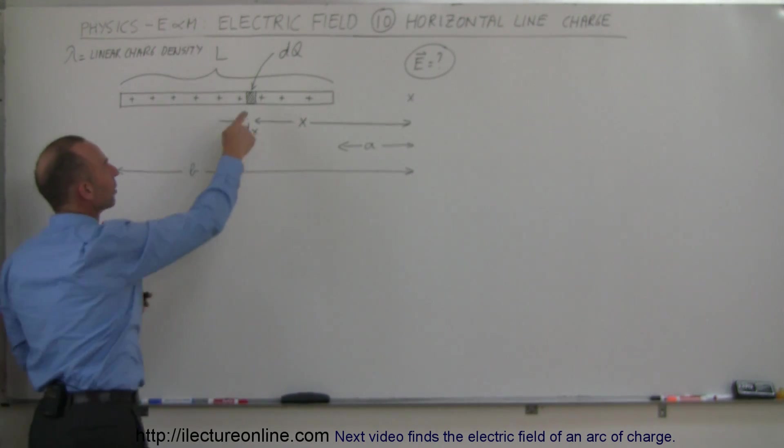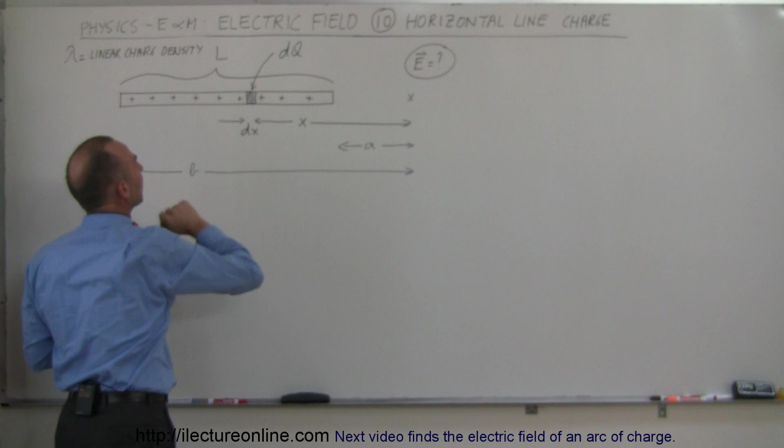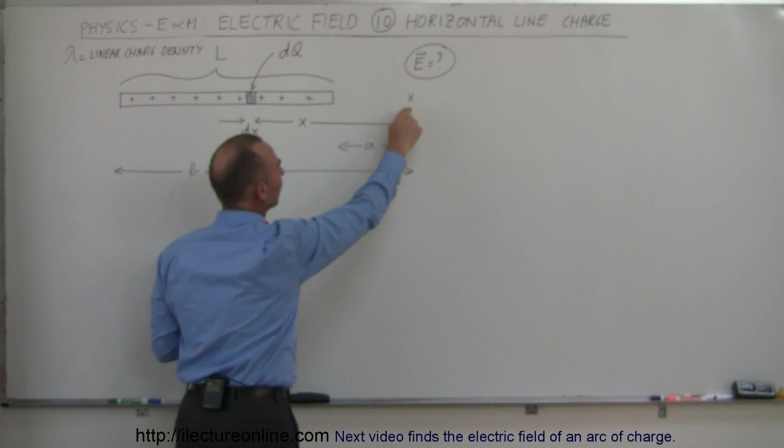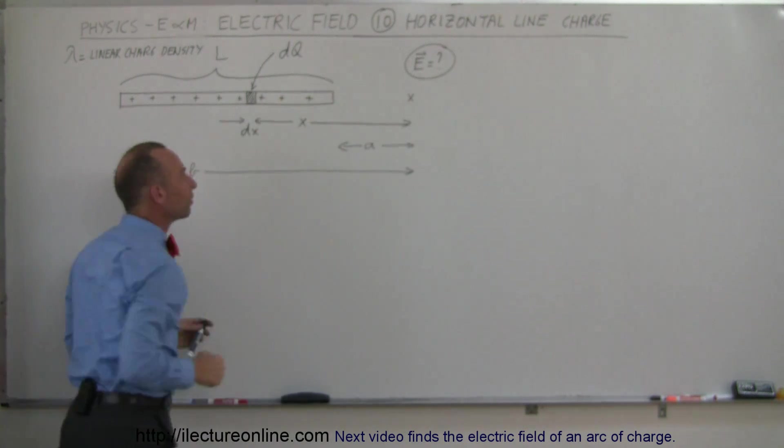And of course, what we want to do is find a small little element on this line charge, and there will be a small amount of DQ on there, and we're going to find the electric field here due to the small amount of DQ.